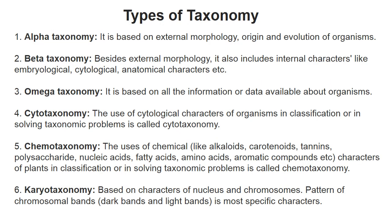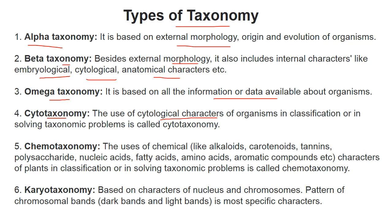Now let's talk about the types of taxonomy. Alpha taxonomy is based on external morphological characteristics. Beta taxonomy is based on external characteristics but also includes embryological, cytological, and anatomical characteristics. Omega taxonomy is based on all available information or data on a particular organism. Cytotaxonomy is totally based on the cytological characteristics of the organism.